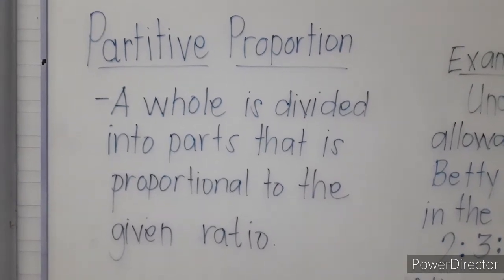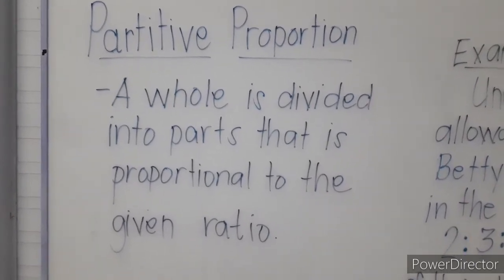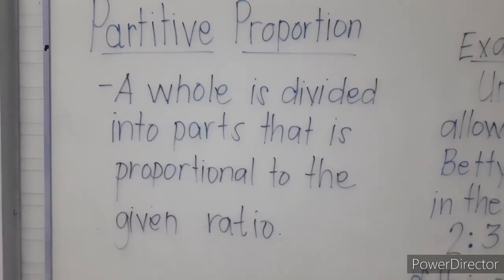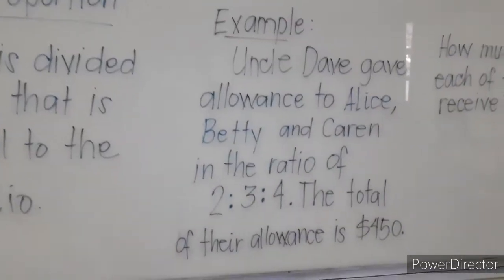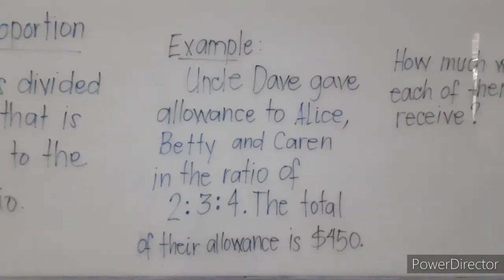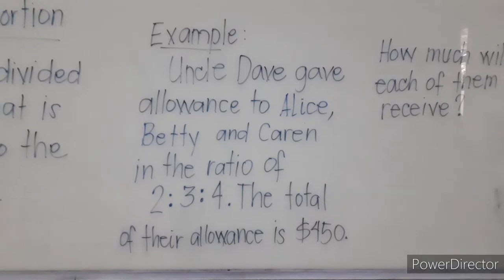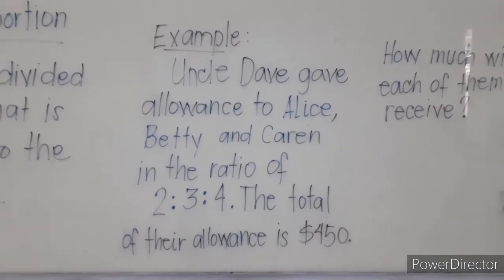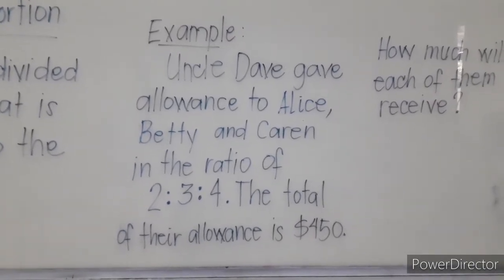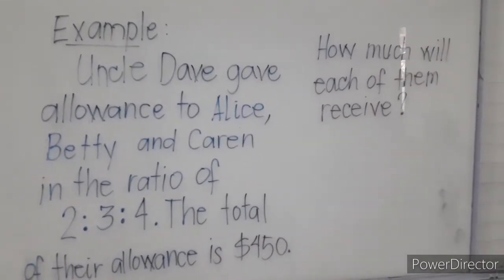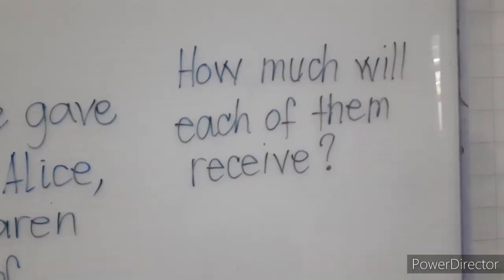Partitive Proportion. For example, Uncle Dave gave allowance to Alice, Betty, and Karen in the ratio of 2:3:4. The total of their allowance is $450. How much will each of them receive?